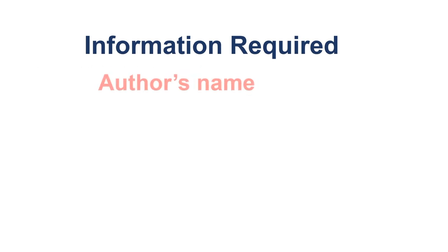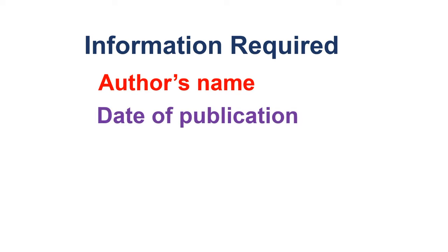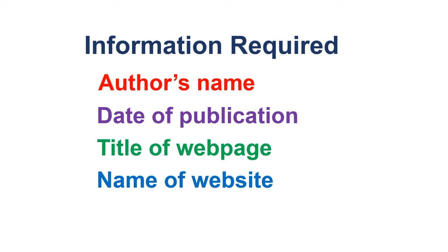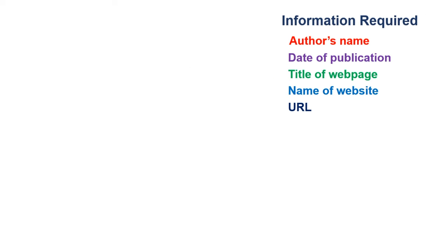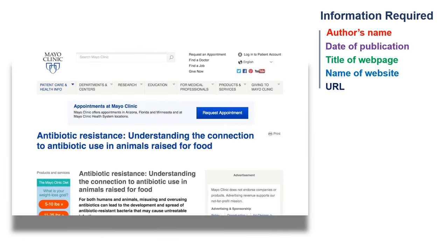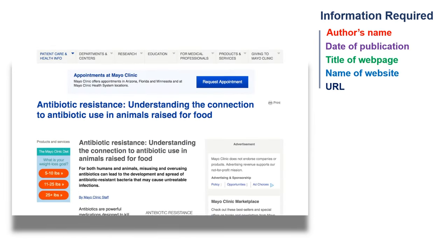To cite a website you will need the author's name, the year and date of publication or update if available, the title of the web page, the name of the website, and the URL. Sometimes you may find it difficult to find all of this information, so be sure to look carefully throughout the website.